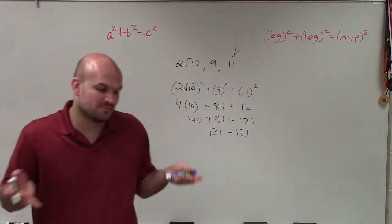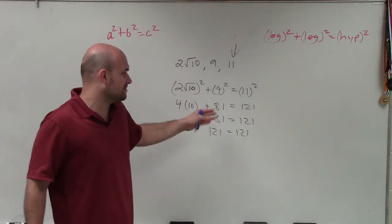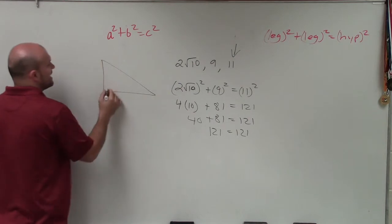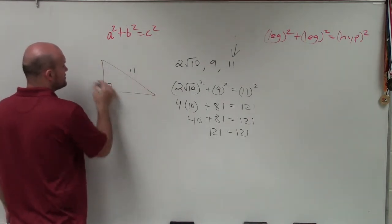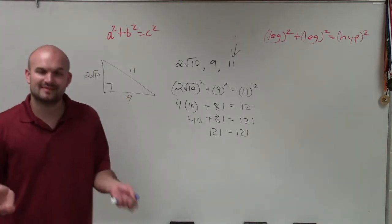So therefore, since when provided the sides we're able to apply the Pythagorean theorem and show that it works, we can say that yes, these are the sides of a right triangle where the hypotenuse is 11 and the two legs are 2 square root of 10 and 9. Thanks.